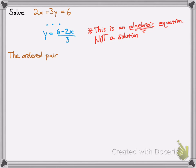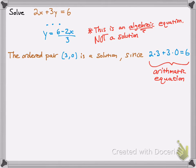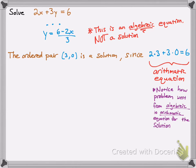So what is a solution? You could say the ordered pair (3, 0) is a solution, since plugging in 3 for x and 0 for y gives 2 times 3 plus 3 times 0 equals 6. But that's just one solution, and it's an arithmetic equation. Notice what we did: we went from an algebraic equation and converted it into an arithmetic equation to find the solution.